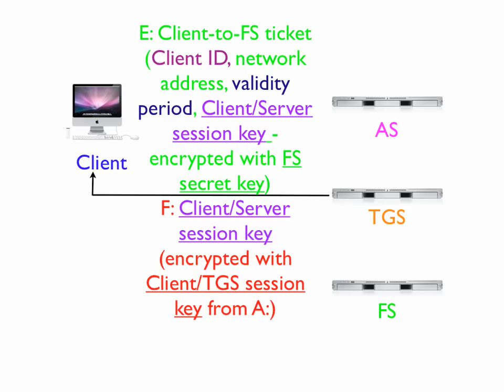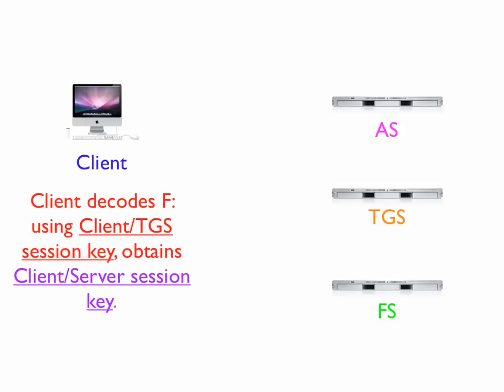If the client ID from C matches client ID from D and it has not expired, the ticket-granting server sends two messages back to the client. Message E is a client-to-service ticket for the file server, containing the client ID, network address, validity period, and the client-server session key — only the file server can decrypt this. Message F contains the client-server session key, encrypted with the client-TGS session key received earlier. The client decodes message F using the client-TGS session key and obtains the client-server session key.